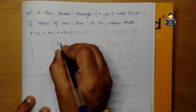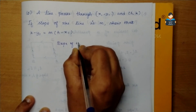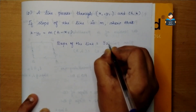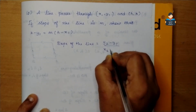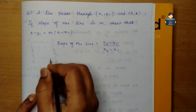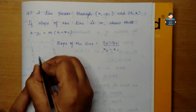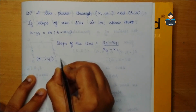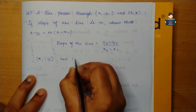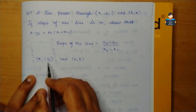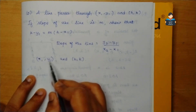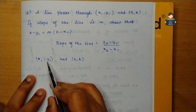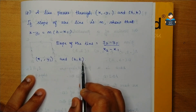So, the slope of the line is equal to y2 minus y1 by x2 minus x1. The slope of the line passes through the points (x1, y1) and (h, k).